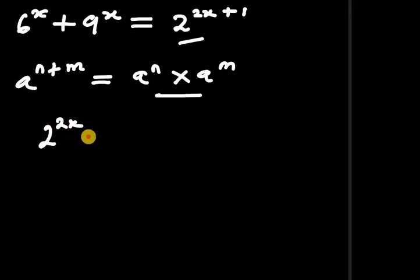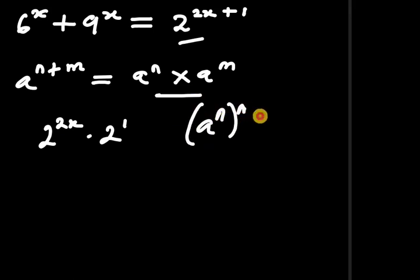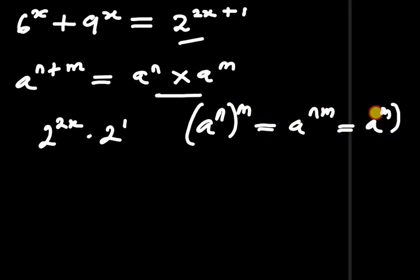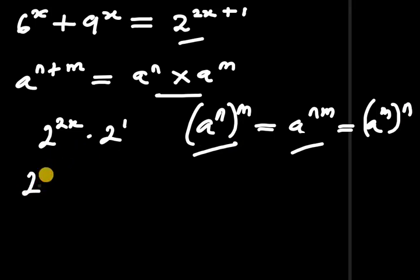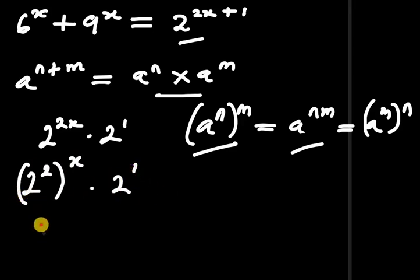We are going to have 2 to the power of 2x times 2 to the power of 1. Recall also the identity: a to the power of n times m equals a to the power of nm. So applying this, 2 to the power of 2x becomes 2 to the power of 2 all to the power of x, times 2 to the power of 1, and this becomes 4 to the power of x times 2.